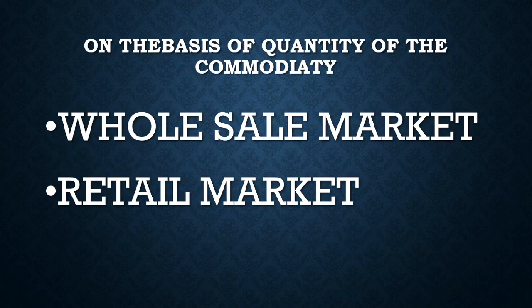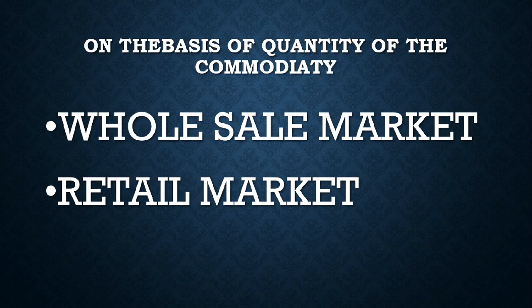On the basis of quantity of the commodity, the market is classified into wholesale market and retail market. In a wholesale market, a dealer like a Britannia dealer buys in bulk. A retail dealer then sells to individual customers.